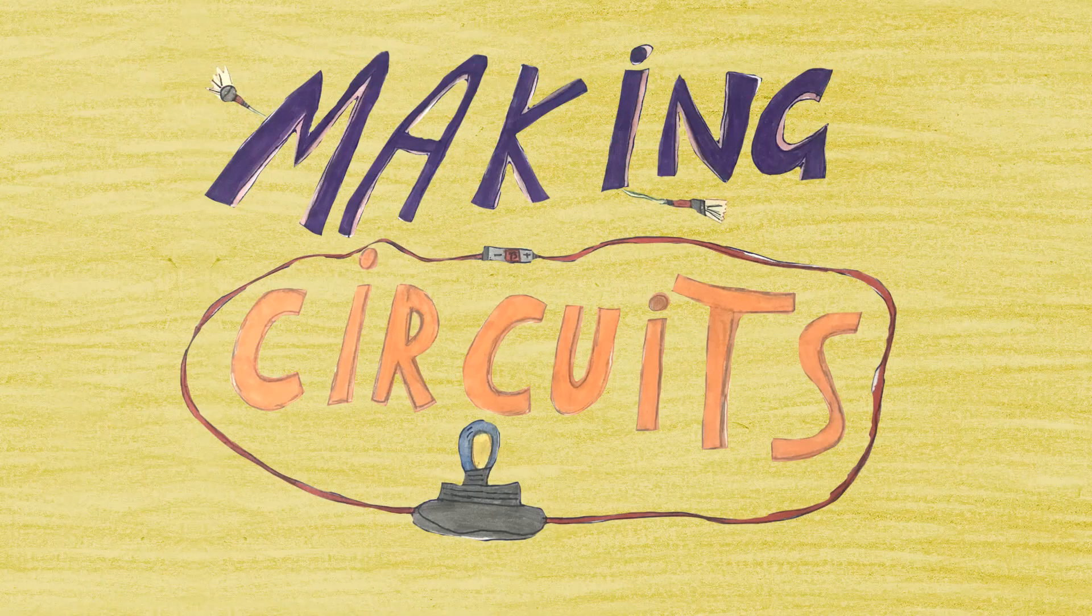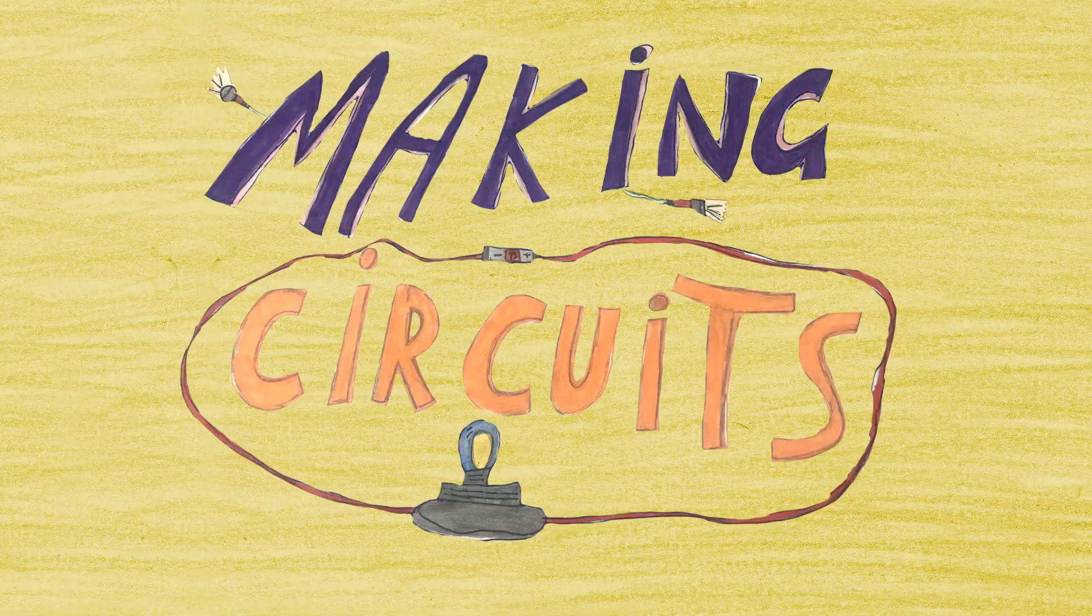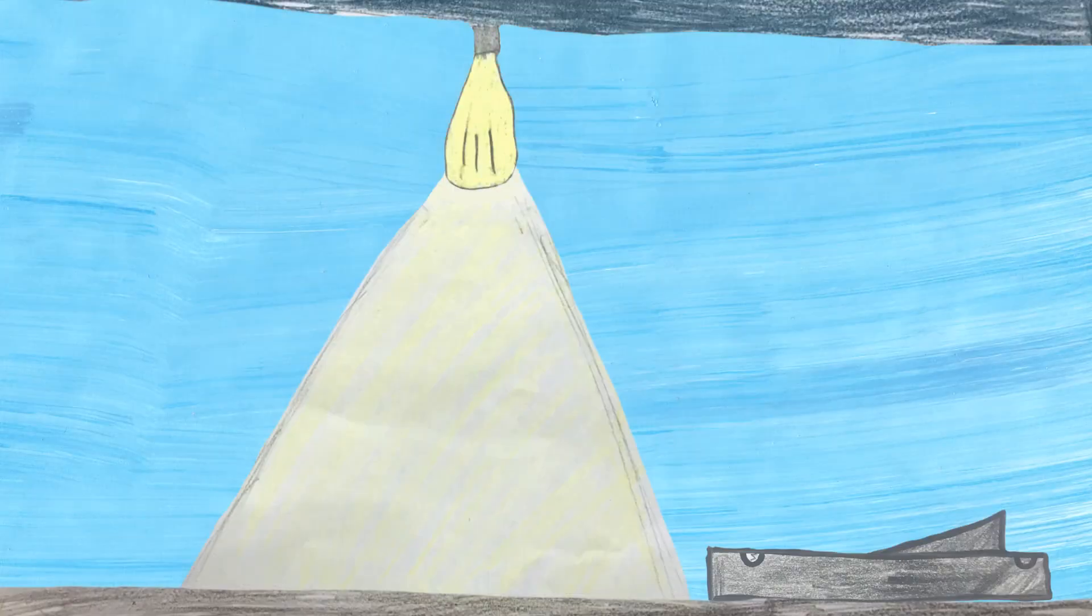An electrical circuit is made of different components. A lamp and a switch are components.